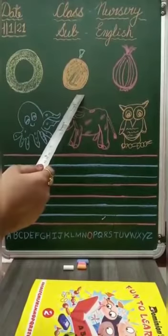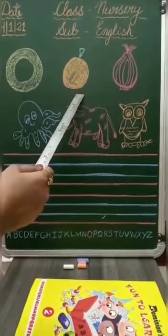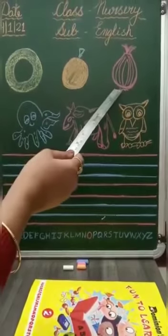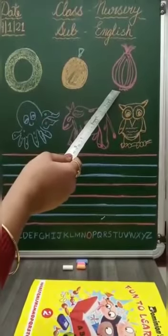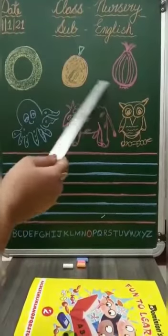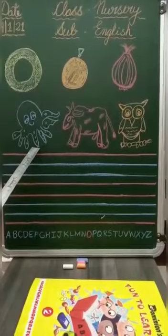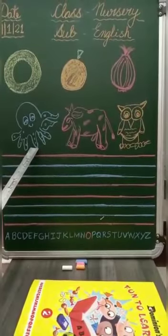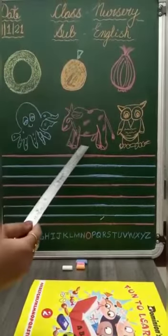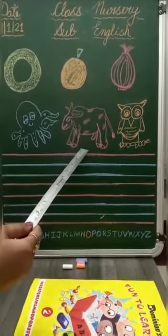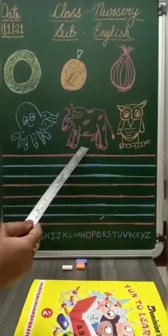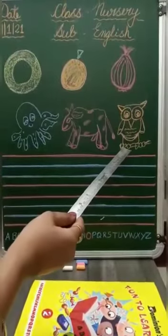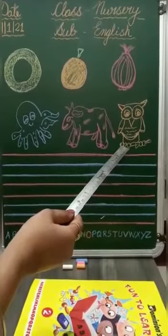O for orange, O, O, orange. O for onion, O, O, onion. O for octopus, O, O, octopus. O for ox, O, O, ox. O for owl, O, O, owl.